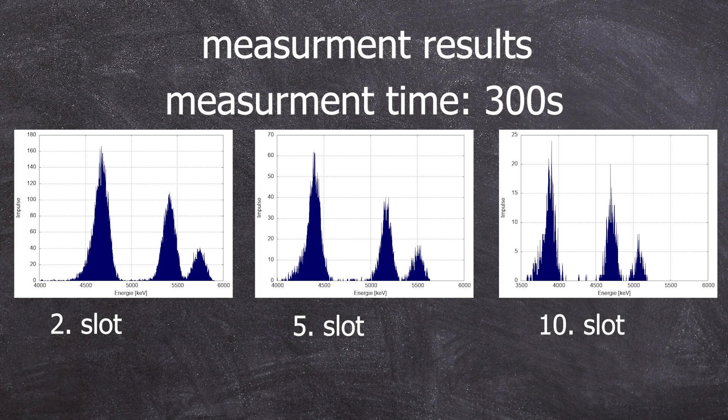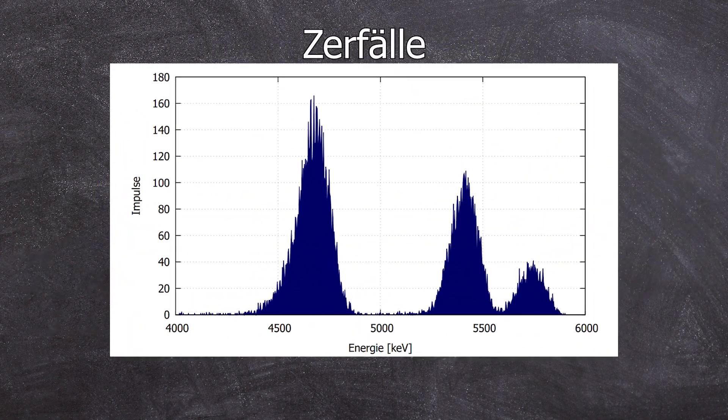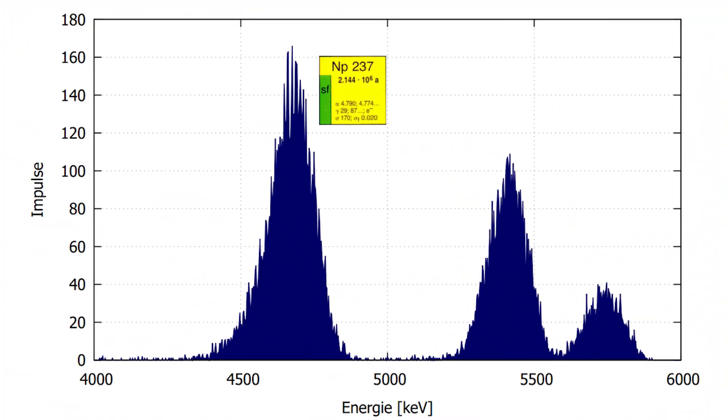Now pay attention to both axes dimensions. Here we see neptunium-237 with an alpha energy of 4788 kiloelectron volts, which decays into protactinium-233 with a half-life of 2.1 million years. Americium-241 decays with an alpha energy of 5486 kiloelectron volts and a half-life of 432 years to neptunium-237. Curium-244 decays with an alpha energy of 5805 kiloelectron volts to plutonium-240.